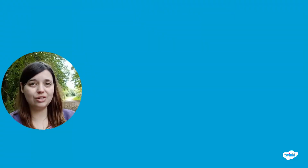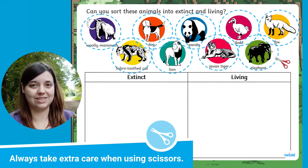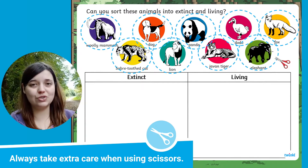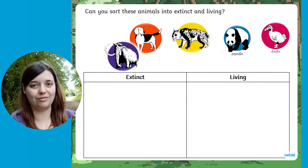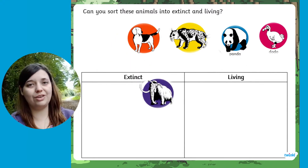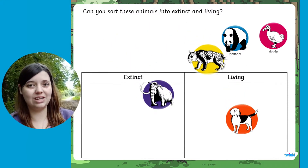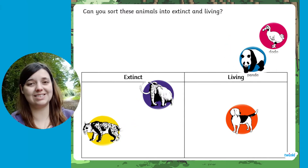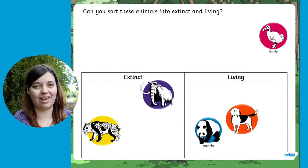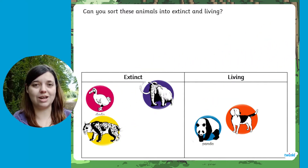You can use this slide as a fantastic classifying activity where children can sort the animals to show off their understanding of what they have learned. If you have a printer, you could print off the slide and let your child sort the animals into extinct and living by writing the names under the right heading.